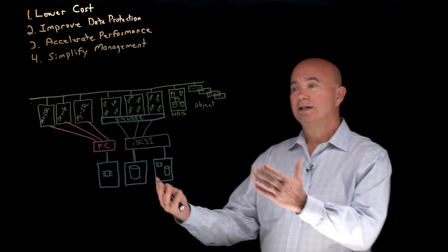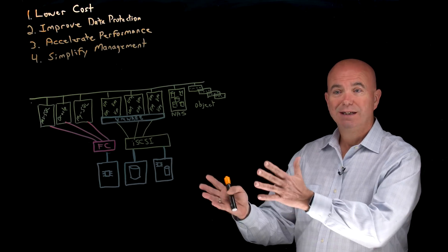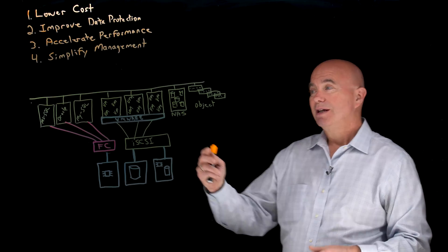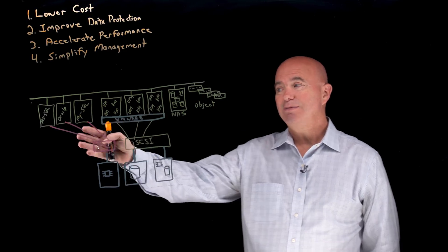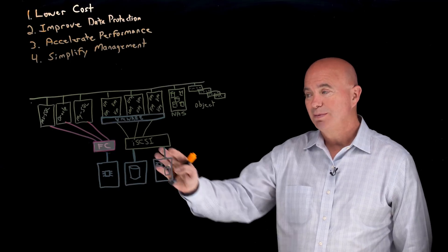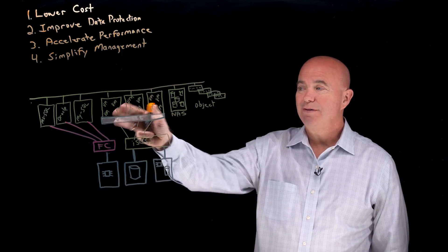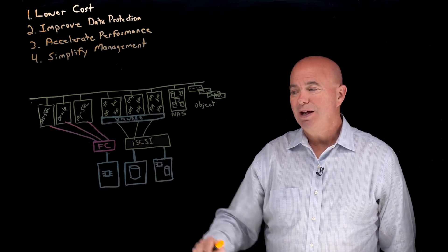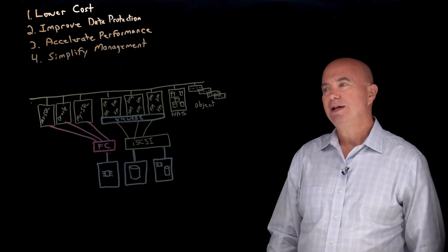Now the challenge is that most data centers look like this. In fact, many people watching this would wish their data center was this simple. But in most cases we have a collection of databases, a lot of times they're on their own storage network, probably fiber channel, maybe going to an all-flash array. Then we might have a VMware environment or virtualized environment, and it might be iSCSI to either a hard disk based system or a hybrid based system.